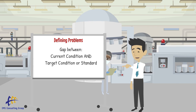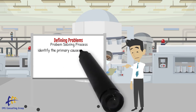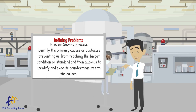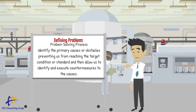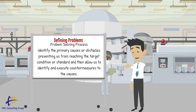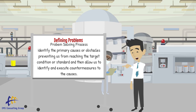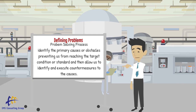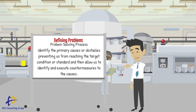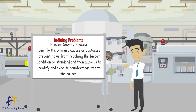Any good problem solving process will aim to identify the primary causes or obstacles preventing us from reaching the target condition or standard, and then will allow us to identify and execute countermeasures to the causes. There will also be follow-up and monitoring.